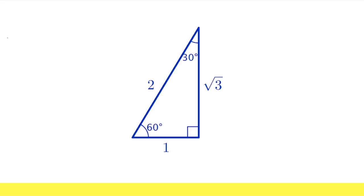Now, as we can see, whenever we have a 30-60-90 special right triangle, the ratio of the sides are 1, square root of 3, and 2.